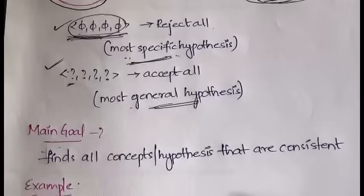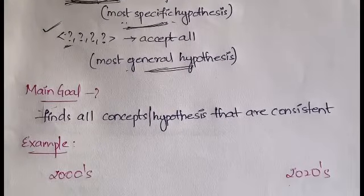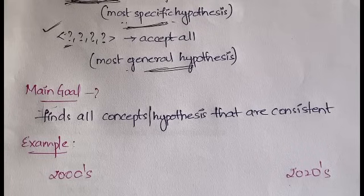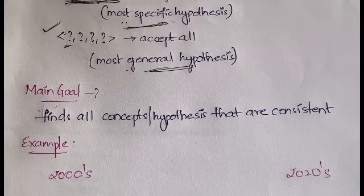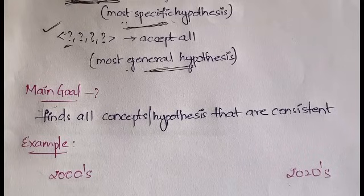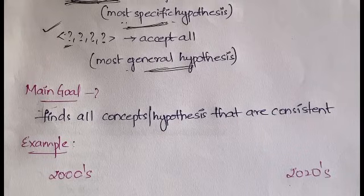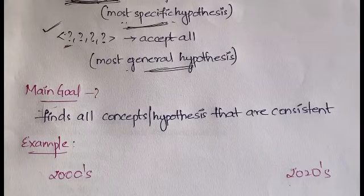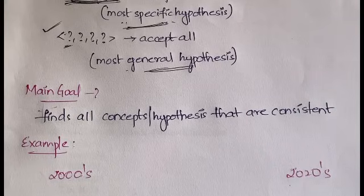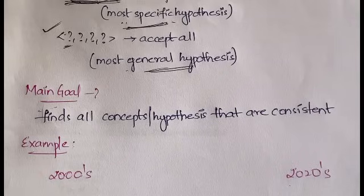The main goal of concept learning is to find all the concepts or hypotheses that are always consistent, so that we can derive a conclusion for the final system. If you select a hypothesis that is not consistent and keeps changing, the conclusion derived from it will also keep changing. So you need to select only those hypotheses or concepts which are always consistent — that is the main goal of concept learning.